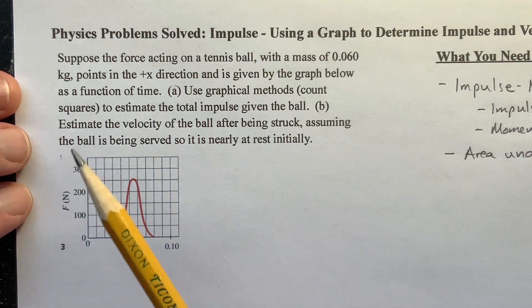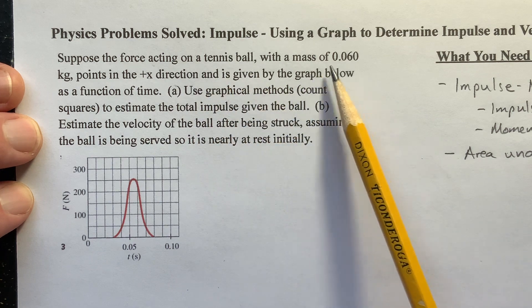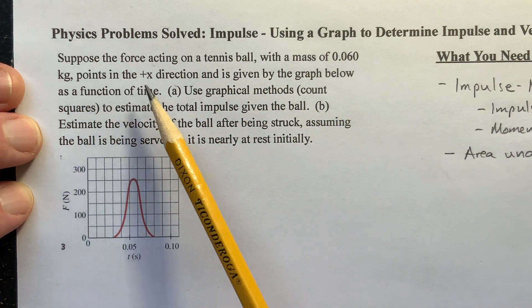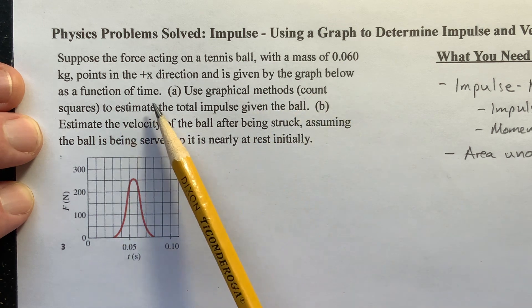So let's read it. It says, suppose the force acting on a tennis ball with a mass of 0.060 kilograms points in the positive x direction and is given by the graph below as a function of time.